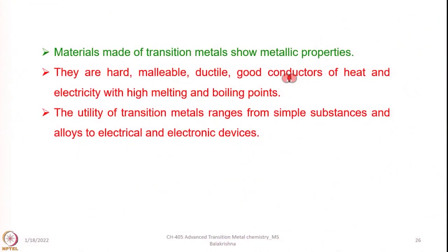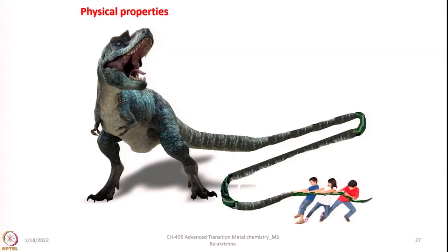Materials made of transition metals show metallic properties — they are hard, malleable, ductile, and good conductors of heat and electricity with high melting and boiling points. The utility of transition metals ranges from simple substances and alloys to electrical and electronic devices. Let me stop at this juncture and focus more on physical properties and other important properties related to transition elements in my next class. Until then, have a good time. Thank you.